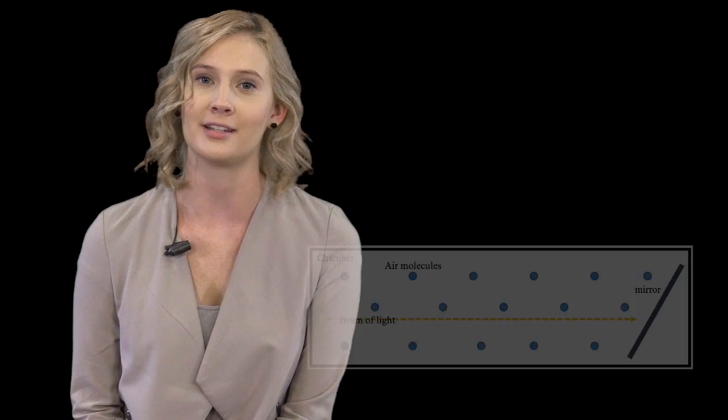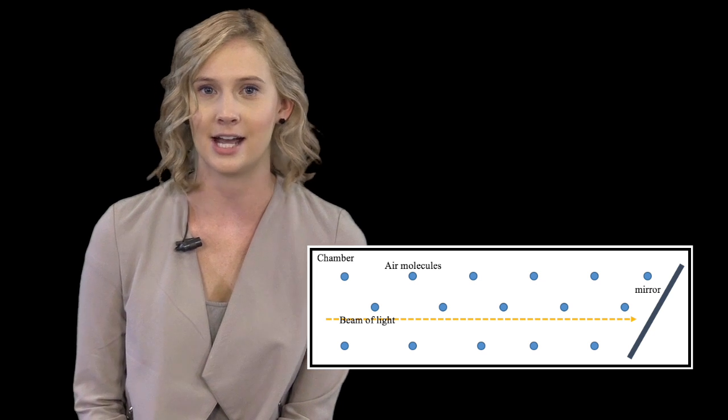How a dew point hygrometer works is a little complicated, so let's break it down. There are a couple of different components: a chamber with a mirror, a light beam, and a light detector.